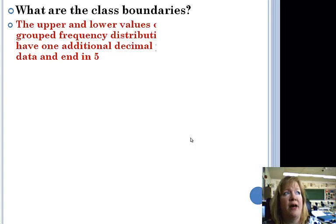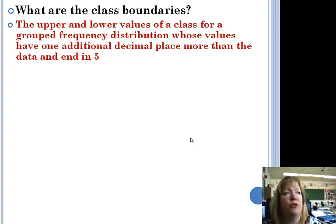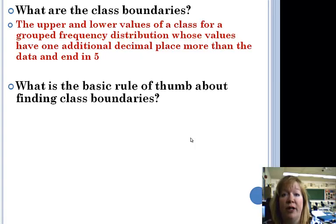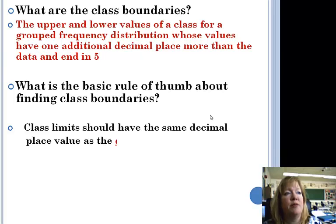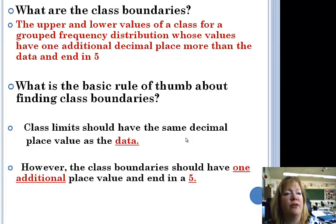Now these were just vocabulary. We'll see how these play out in our charts in a minute. Okay, what are class boundaries? The upper and lower values of a class for a group frequency distribution whose values have one additional decimal place more than the data and end in five. These are the boundaries that you found in chapter one. Remember when you went down a half step and up a half step? And when you're trying to find the class boundaries, class limits should have the same decimal place as the data. So the class limits are different than the class boundaries. The class boundaries always end in five.